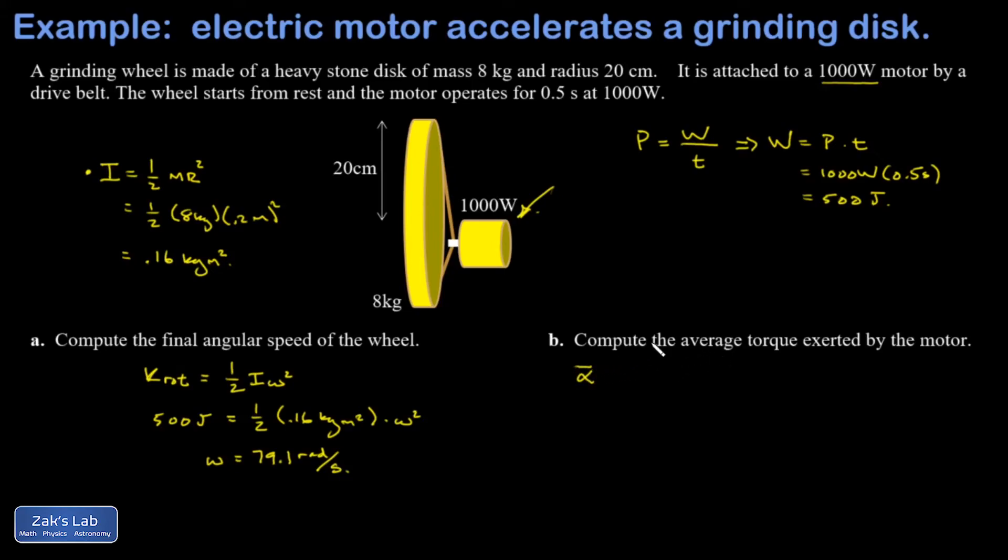So I'm averaging over the whole time for this process. So I'm going to write alpha bar is the change in angular velocity divided by the change in time. So that's going to be a final angular velocity of 79.1 radians per second minus the initial, which was zero, all divided by how much time it took. And I end up with 158 radians per second squared.